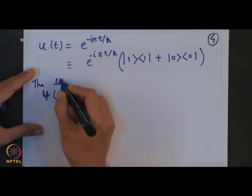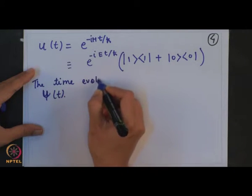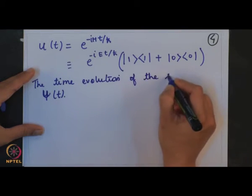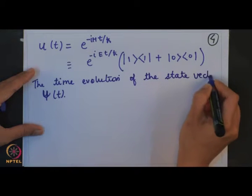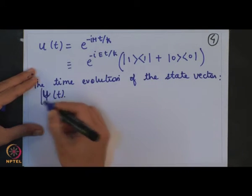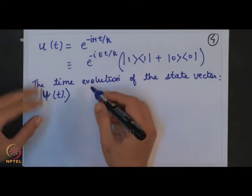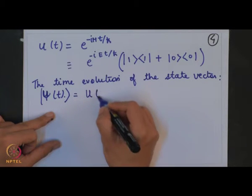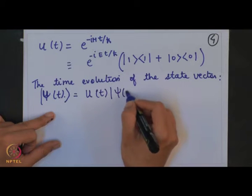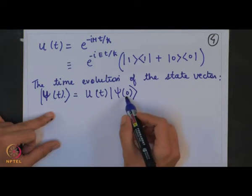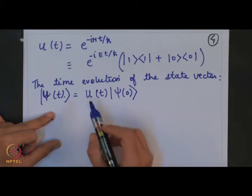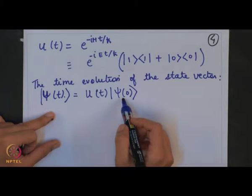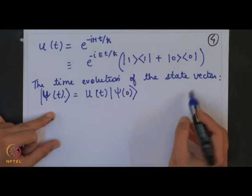Let me write the time evolution of the state vector. This is the state vector. We want to evolve this state vector such that ψ(t) = U(t) ψ(0). From time t=0, U(t) is the unitary operator which will evolve the wave function or state vector with time.